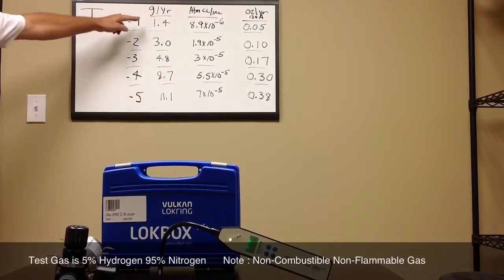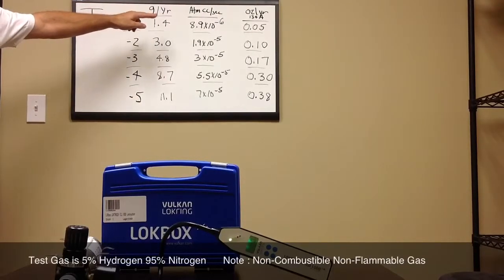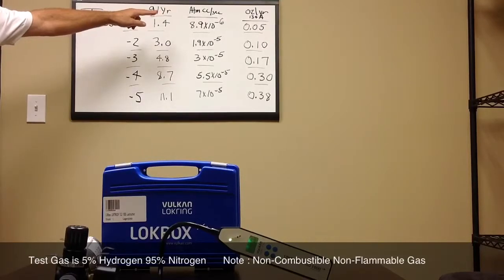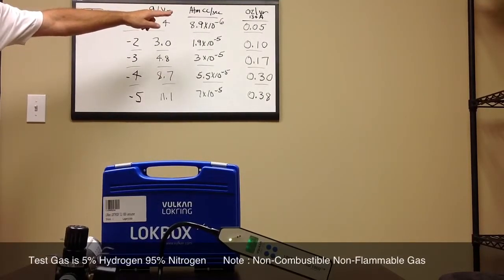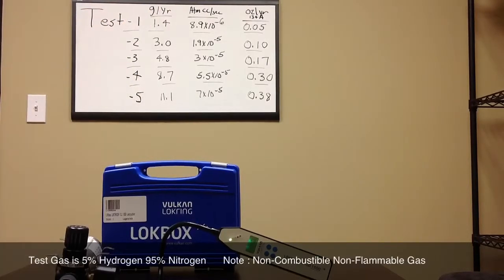First test will be at 1.4 grams per year, which is 8.9 times to the minus 6 on a helium equivalency scale, and then it's 0.05 ounces per year of R134A.